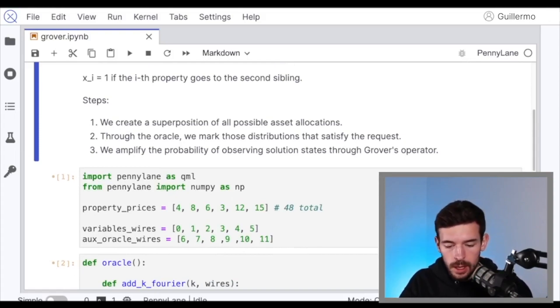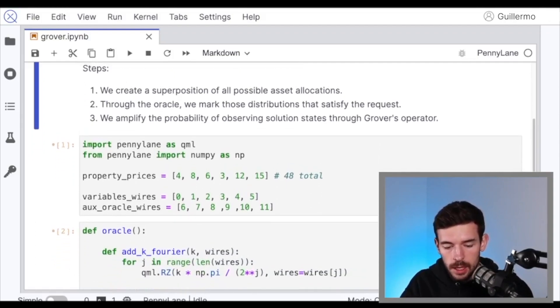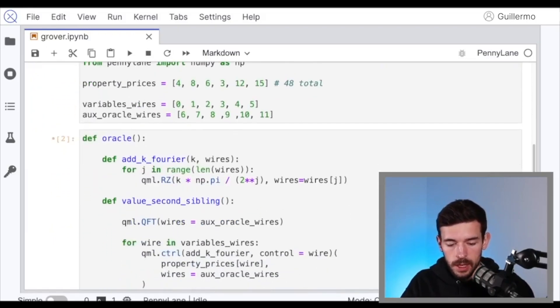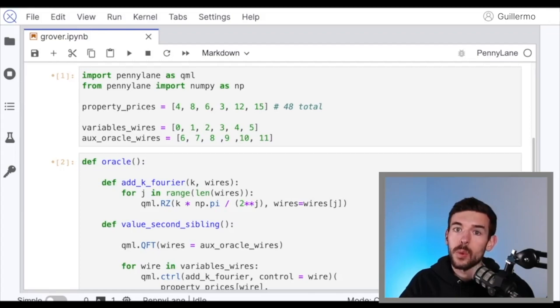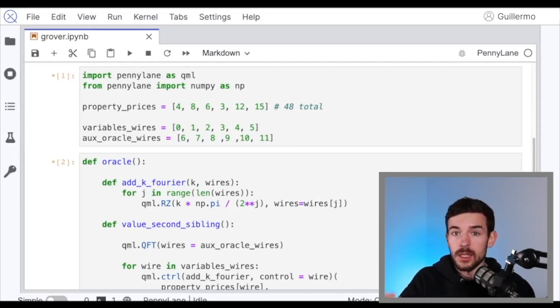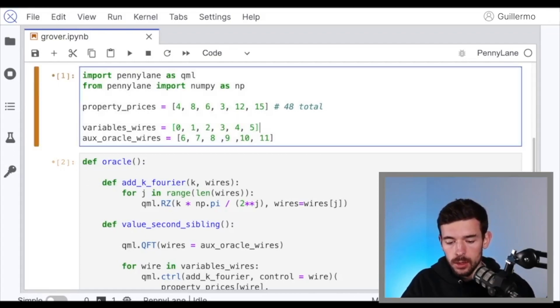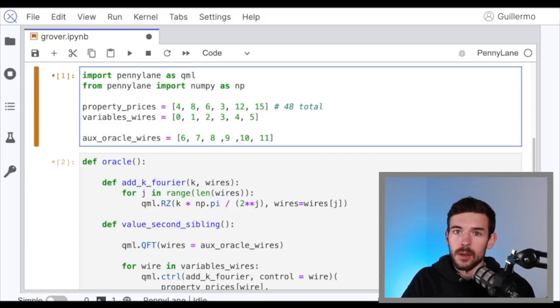So the first thing that we have to do is import our libraries, PennyLane as qml, and numpy from PennyLane. After that, we are going to have two lists. The first one are the property prices, the ones that we define in our problem, and then the list of wires that we are going to use. And as we have six variables, we are going to codify each of these variables in one qubit, so we are going to need six qubits. So that's the main statement of the problem.